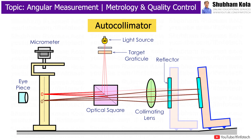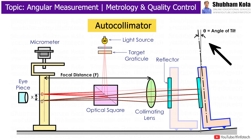In this video, we are going to discuss about the Attocholimeter, which is an optical instrument used to measure small angular differences, also used to align optical components, and used to measure optical and mechanical deflection.